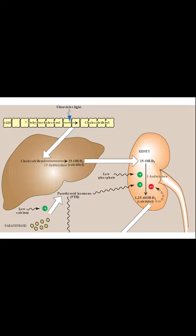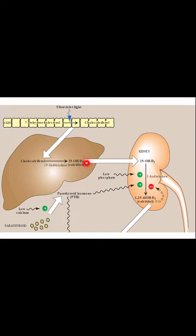In the diagram: 7-dehydrocholesterol is converted into cholecalciferol when light falls on the skin. Cholecalciferol, bound to a protein, comes to the liver where it is hydroxylated at the 25th position by 25-hydroxylase to produce 25-hydroxycholecalciferol, which is the storage form. Then 25-hydroxycholecalciferol is sent to the kidney for another hydroxylation by 1-hydroxylase, converting it into 1,25-dihydroxycholecalciferol, the activated vitamin D.